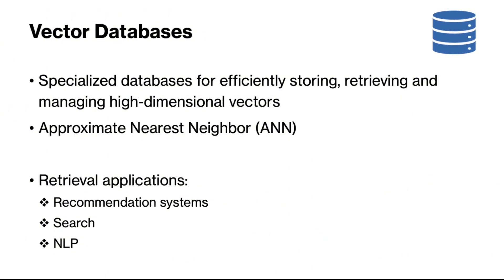Vector databases are specialized databases designed for efficiently storing and searching through high-dimensional data. They implement approximate nearest neighbor algorithms, which is a class of algorithms for approximating k-nearest neighbors. Vector databases have applications in search and recommendation systems, and they are an essential component of a RAG system.